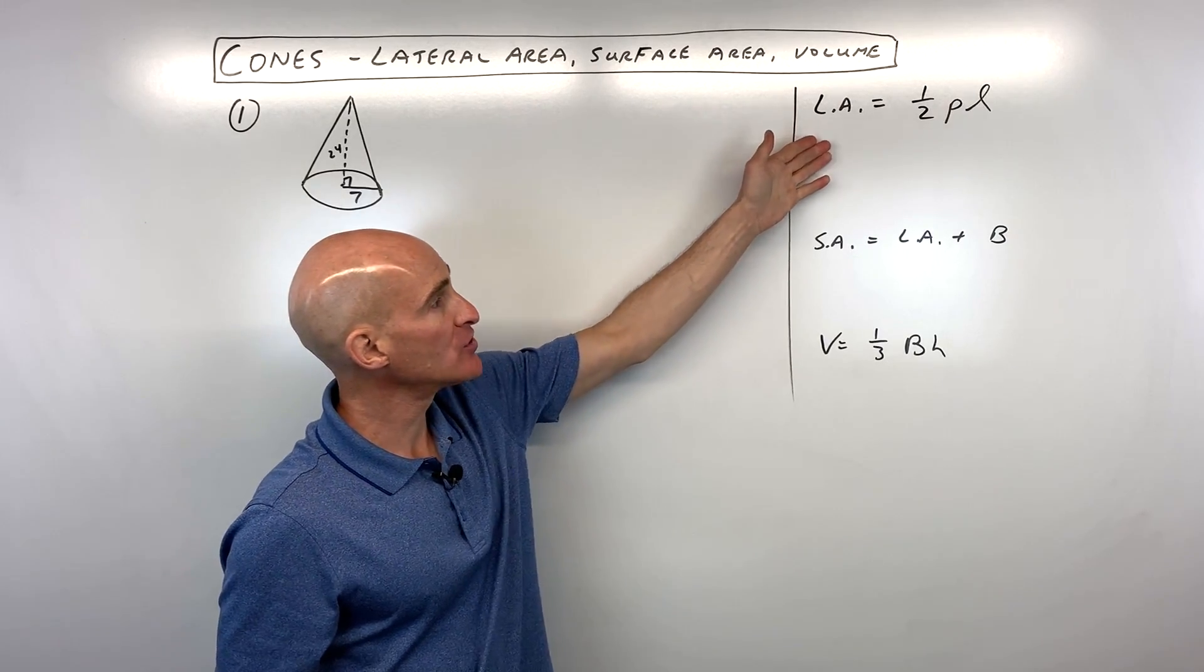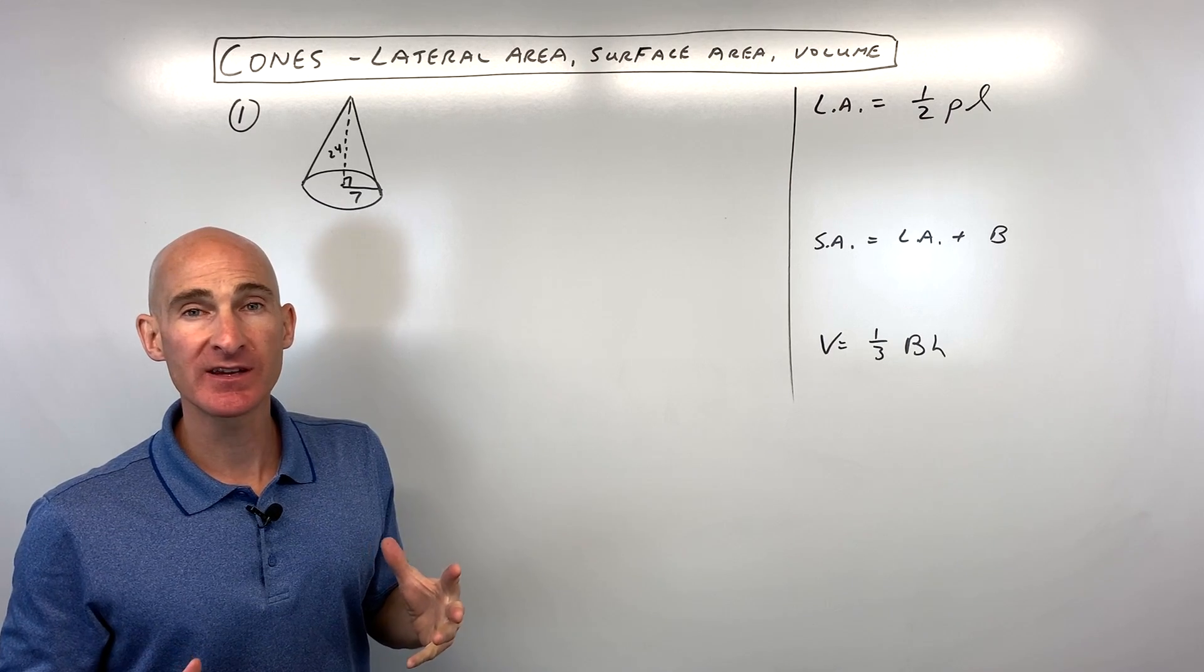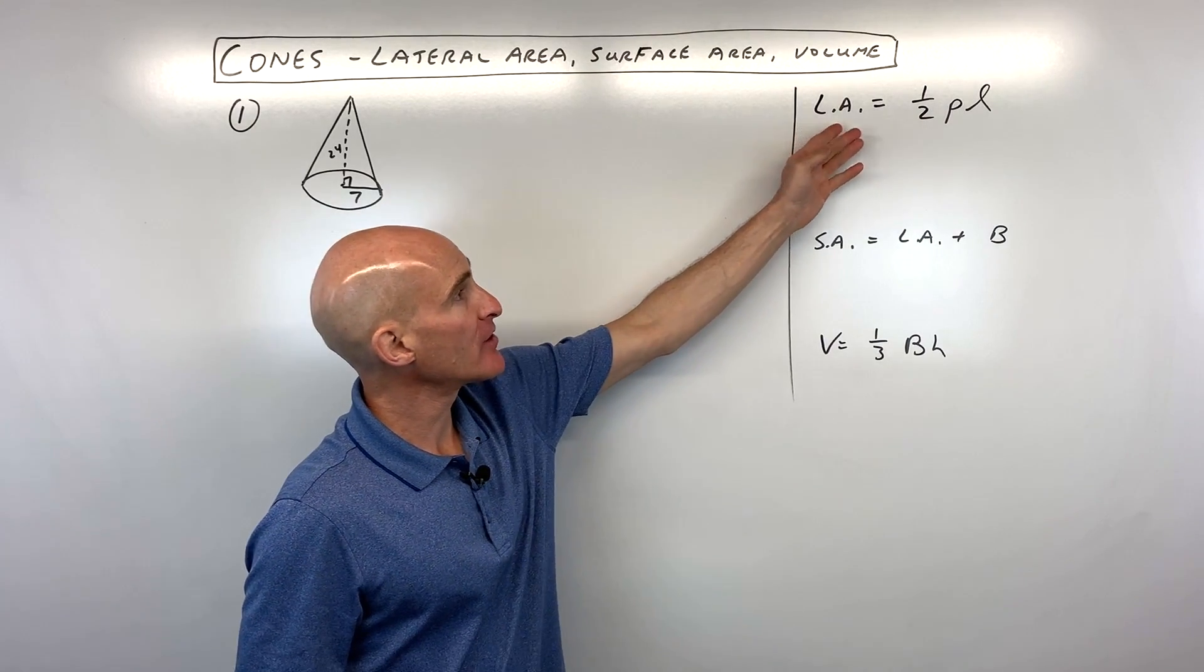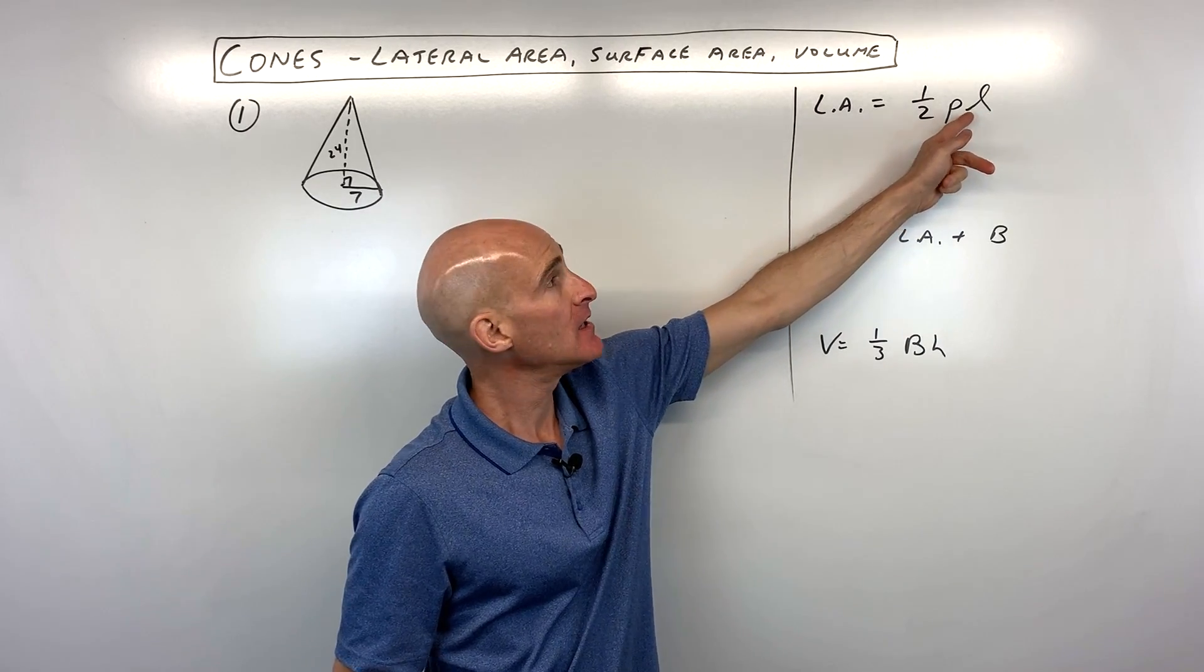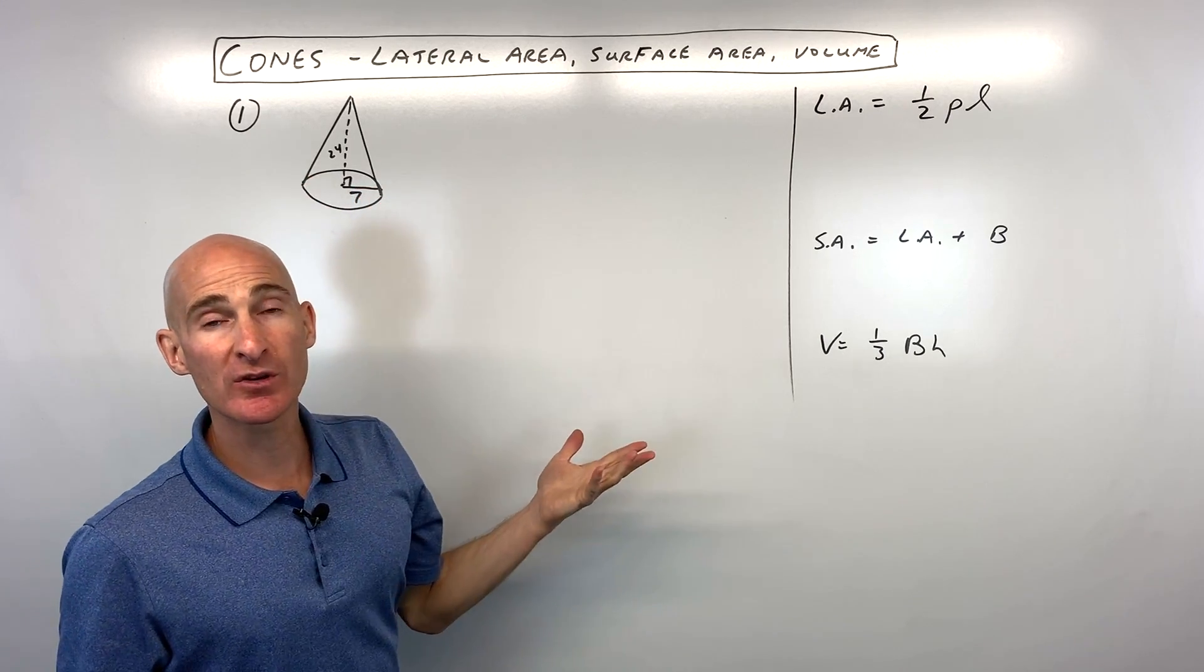The first thing we want to talk about is how to work with the formulas. If you're already familiar with pyramids, the formulas are very similar for a cone. The lateral area is one-half the perimeter of the base times the slant height. The perimeter of the base, you can see that's actually going to be a circle, so that's the circumference of a circle.